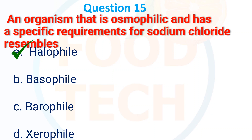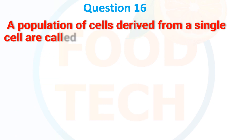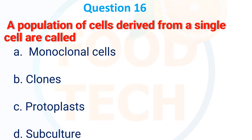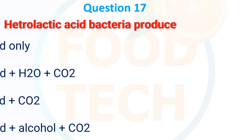The population of cells derived from a single cell are called: A. Monoclonal cell, B. Clone, C. Protoplast, D. Subculture. The answer is B: Clone.